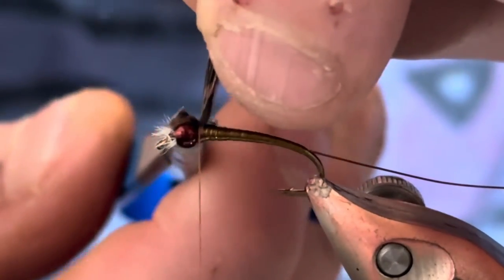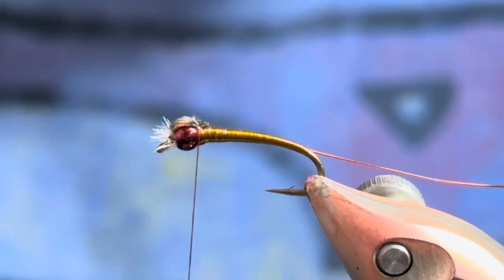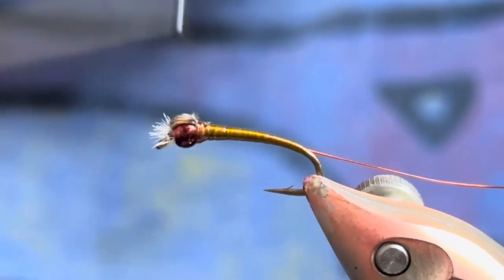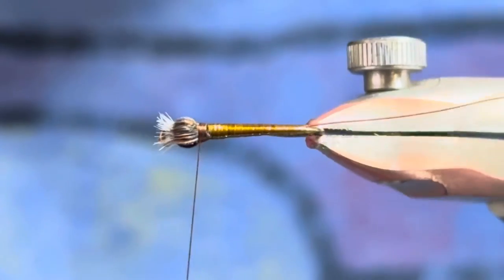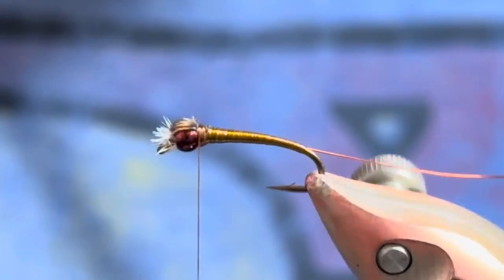And just cover that right on top with just a couple of wraps, and then get in there as close as you can and nip that out. If you've got a little tag there, it's totally okay, and I will show you why in just a second.